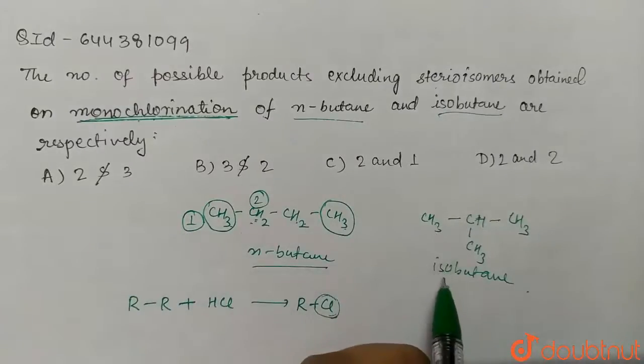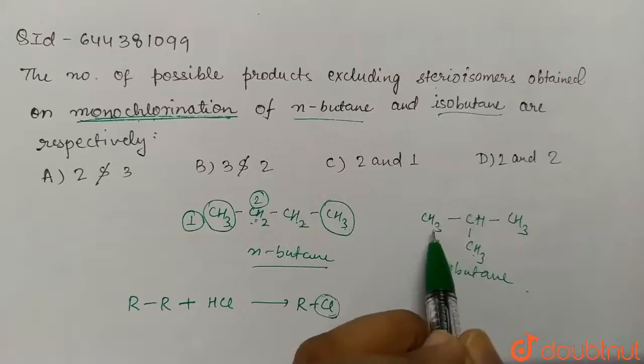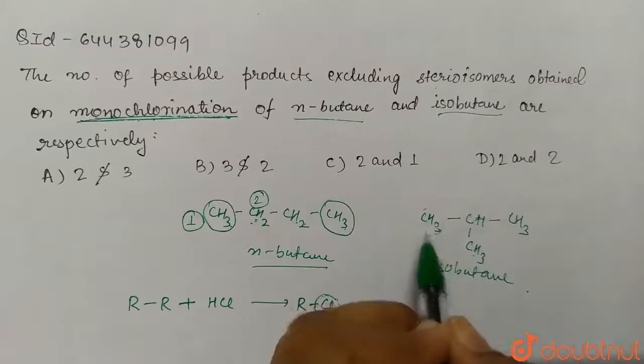Now in isobutane we have one, two, three. These three carbons form the same chlorination product. So here the number of same hydrogen will be one.